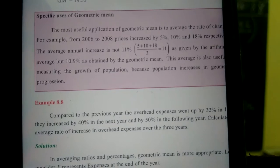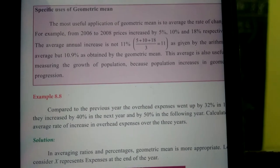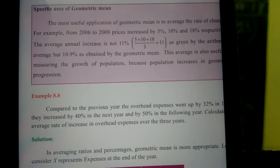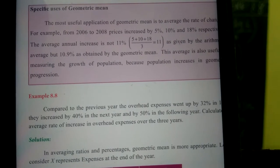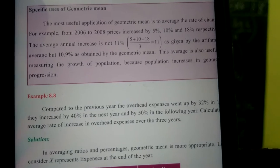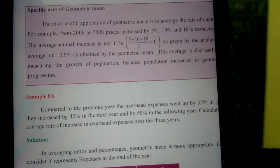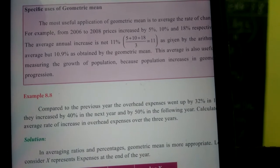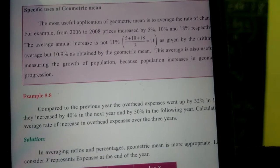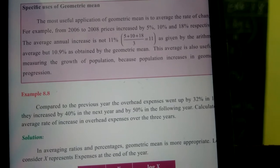Compared to the previous year, the overhead expenses went up by 32%, and in the next year it increased by 40%, and in the next year it increased by 50% in the following year. Now we want to calculate the Average Rate of Increase in Overhead Expenses over the 3 years.